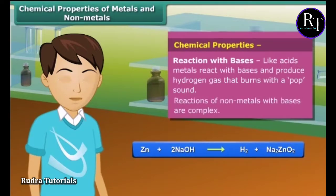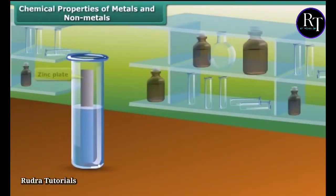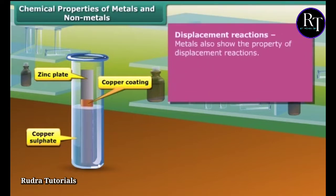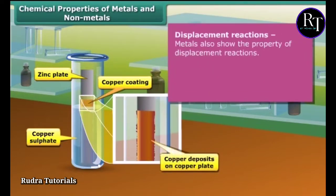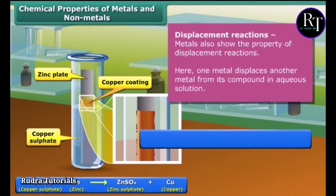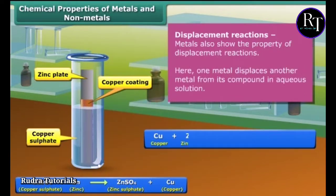You will be surprised to know that like acids, metals also react with bases and produce hydrogen gas. Non-metals react with bases completely. Besides these chemical reactions, metals also show the property of displacement reactions — in which one metal displaces another metal from its compound.